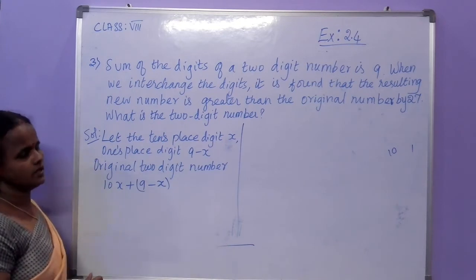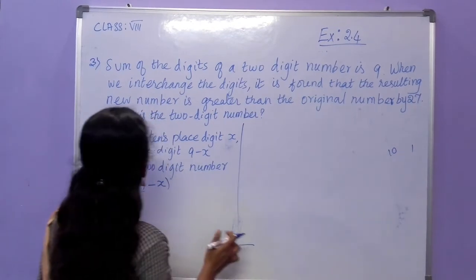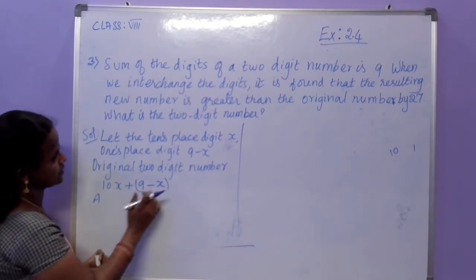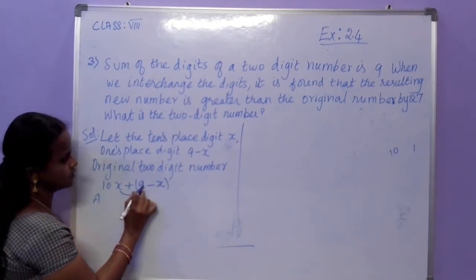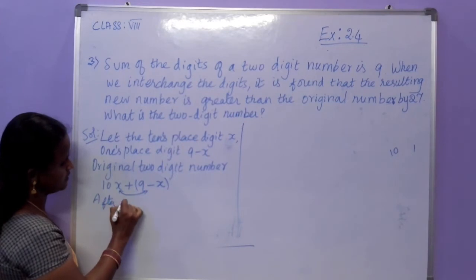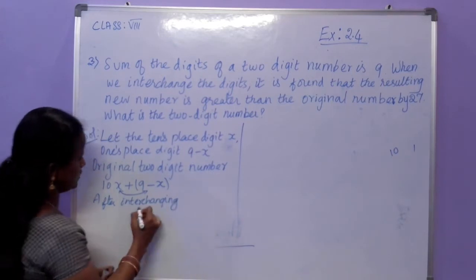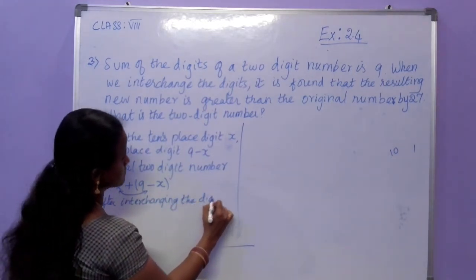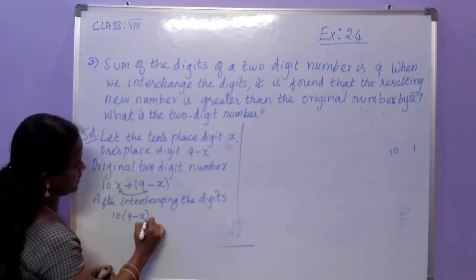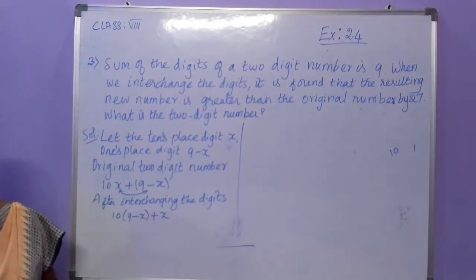When we interchange the digits, it is found that the new number is greater than the original number. After interchanging, the new number becomes 10 into (9 minus x) plus x.